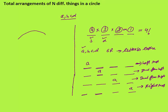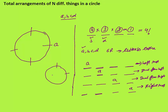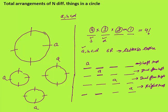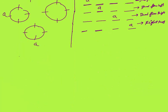Whereas in circular arrangement, if you see this — let's say these are the 4 places where 4 letters will come. If A comes here, or here, or here, or here — all positions are the same. They are not 4 different positions. You can say that all positions are same for A in a circular arrangement.